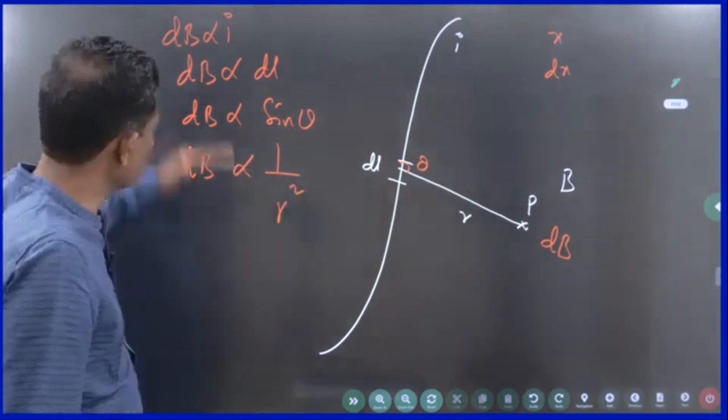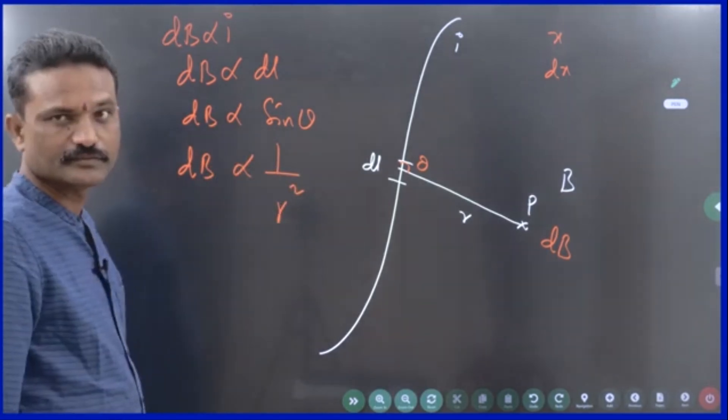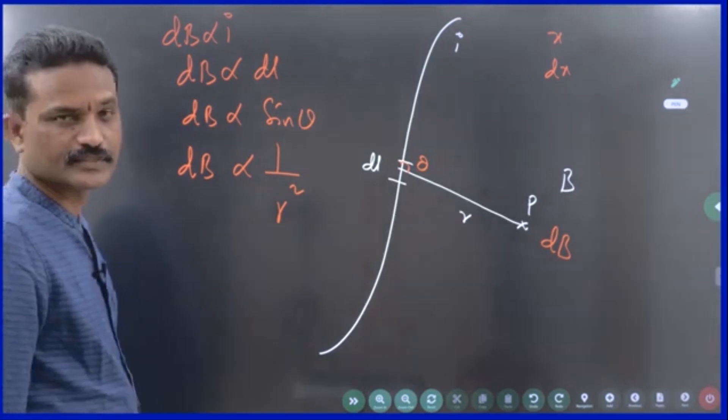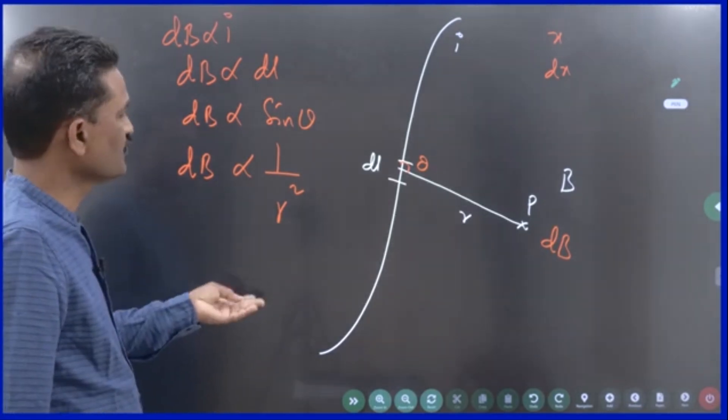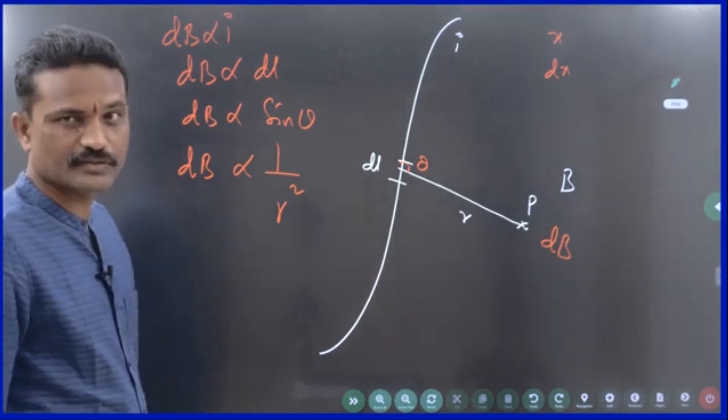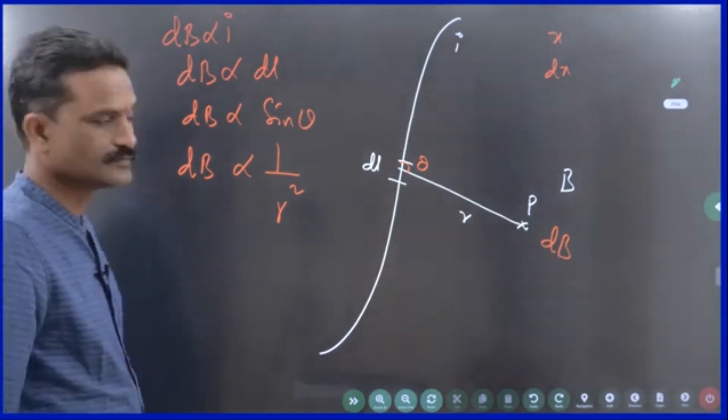So, you are supposed to write all these four lines. Then, it is a four marks question. If you do not write, if you write simply in two to three lines, then it is a one mark question.